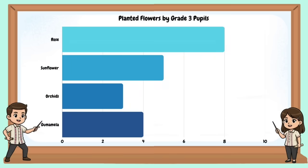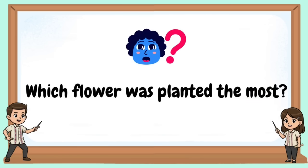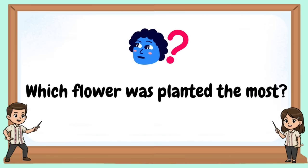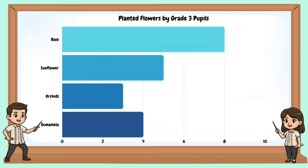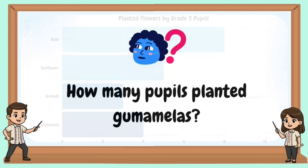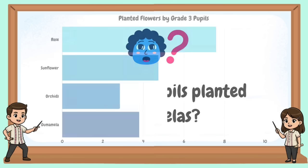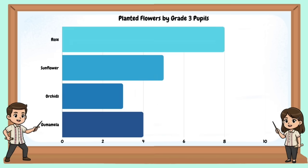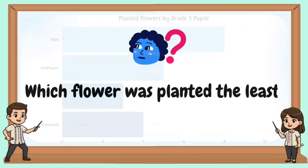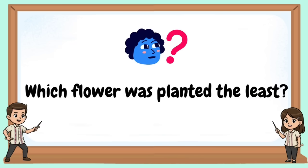Planted flowers by Grade 3 pupils. Which flower was planted the most? How many pupils planted gumamelas? Which flower was planted the least?